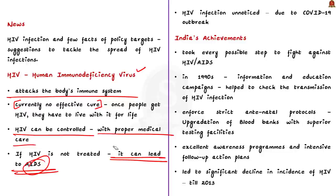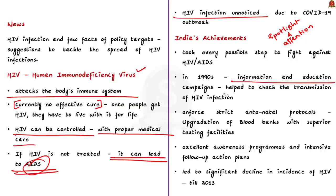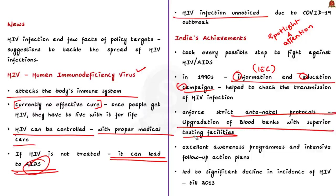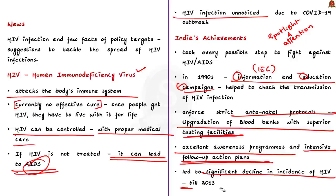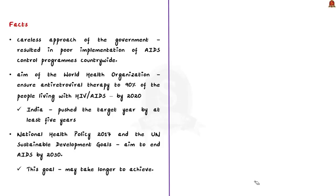According to the article, the COVID-19 outbreak has made HIV infection largely unnoticed. India took many steps to fight HIV in the 1990s — information and education campaigns, strict antenatal protocols, upgradation of blood banks with superior testing facilities, and intensive awareness programs — leading to a significant decline in HIV incidence. However, according to the article's author, these measures were successful only until 2013, after which a careless approach by the government resulted in poor implementation of AIDS control programs.